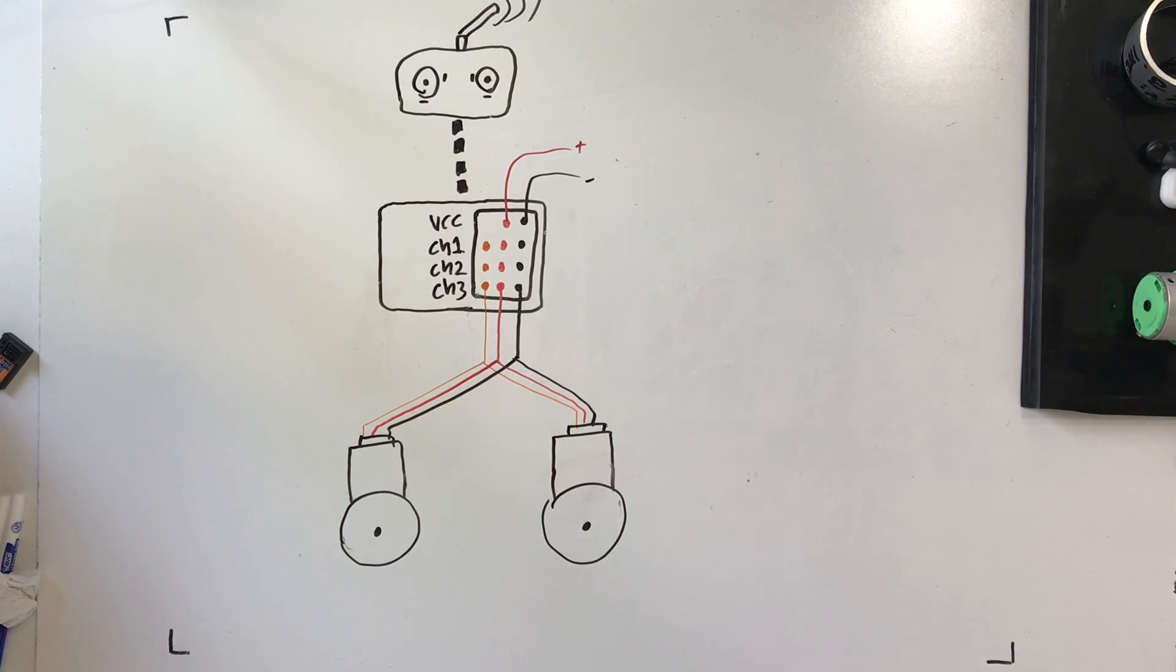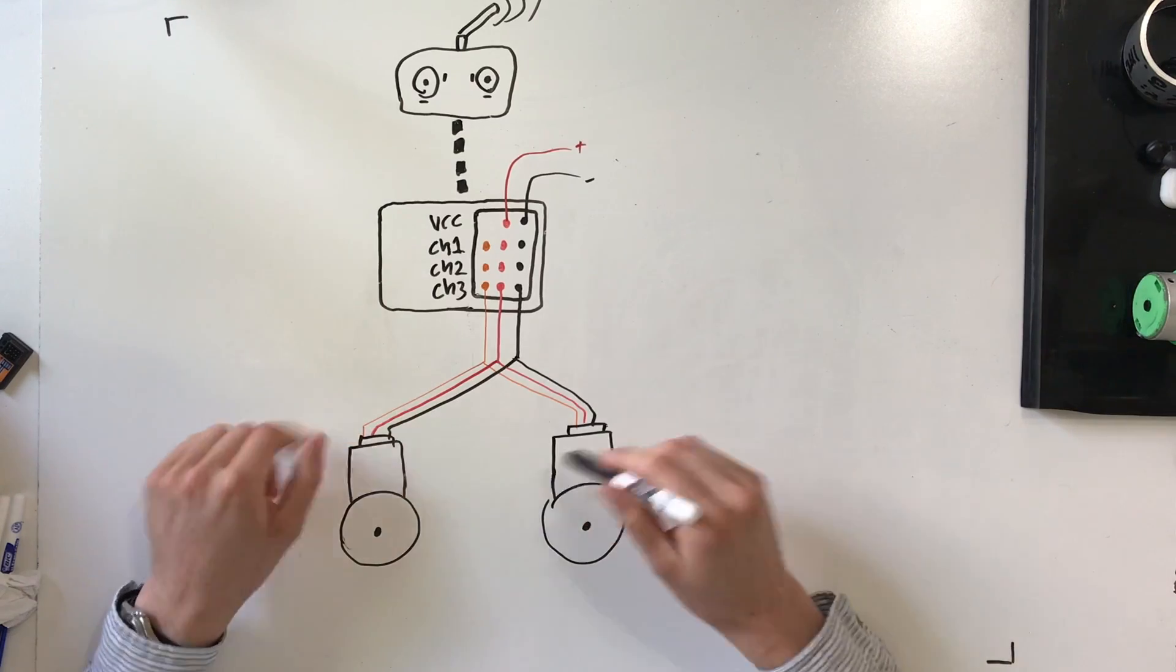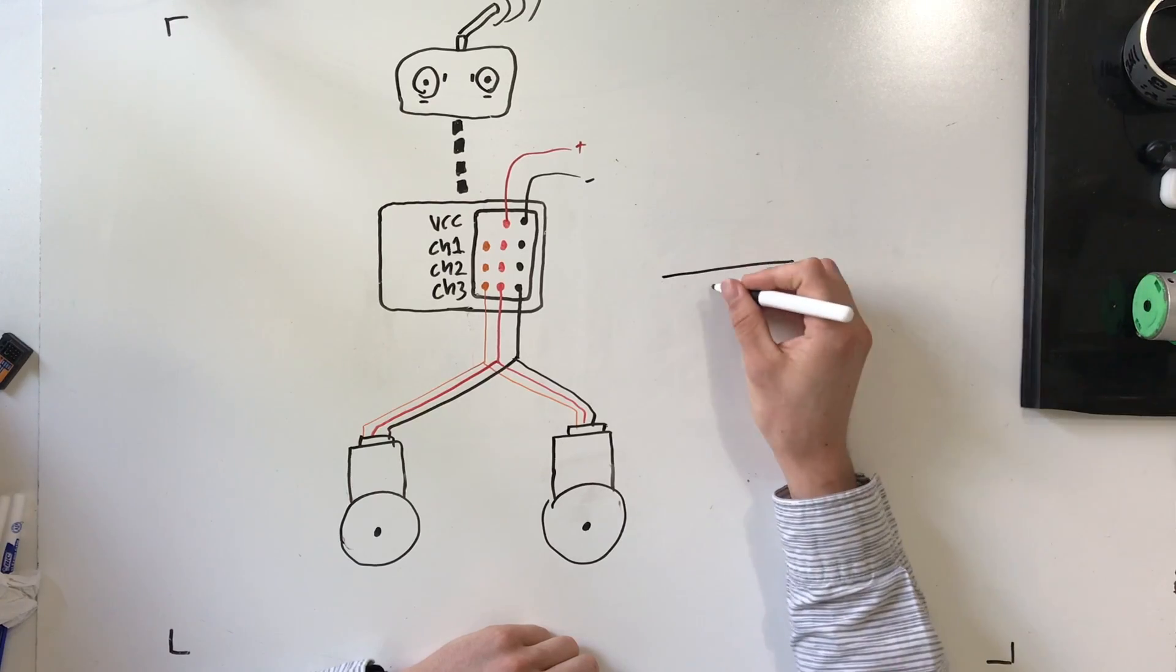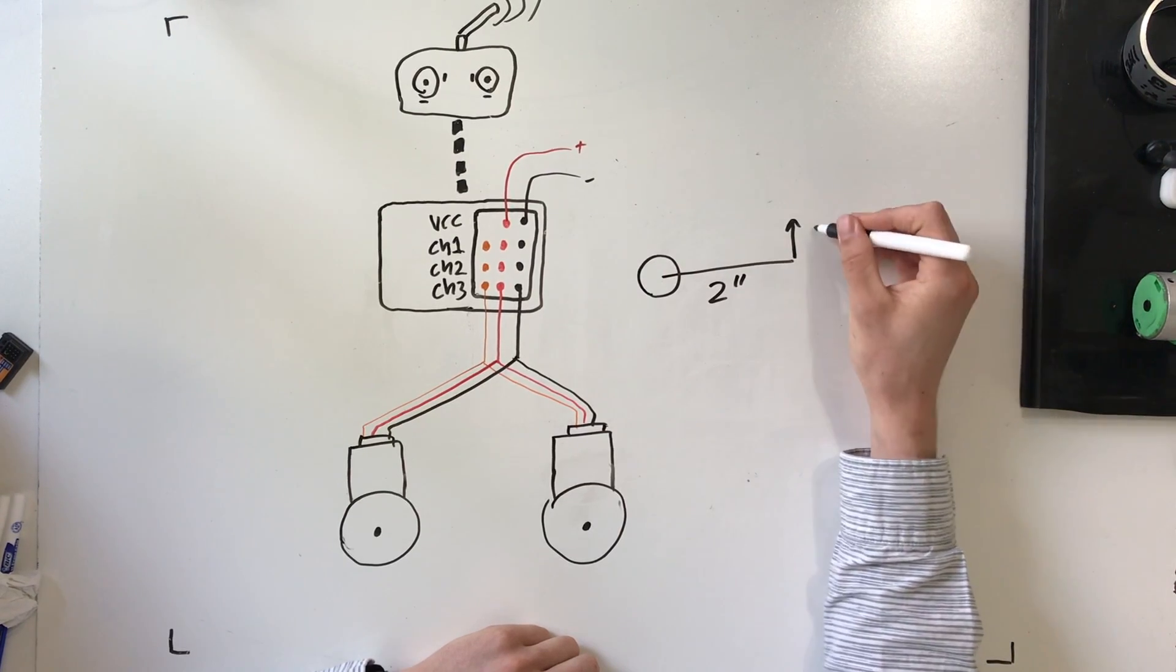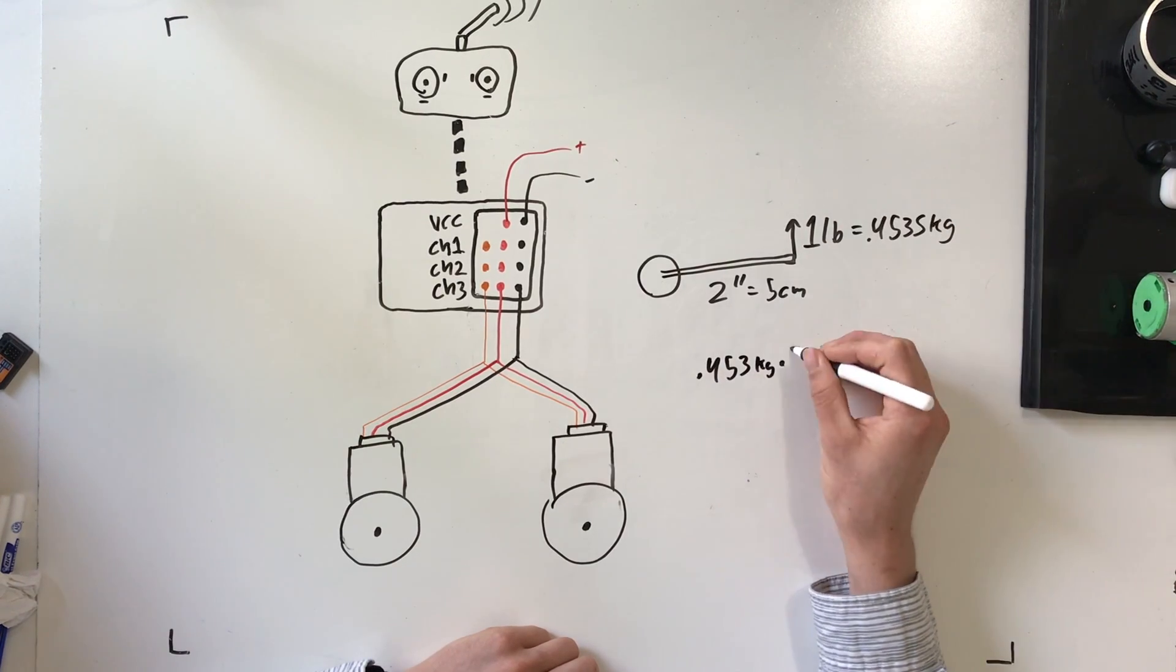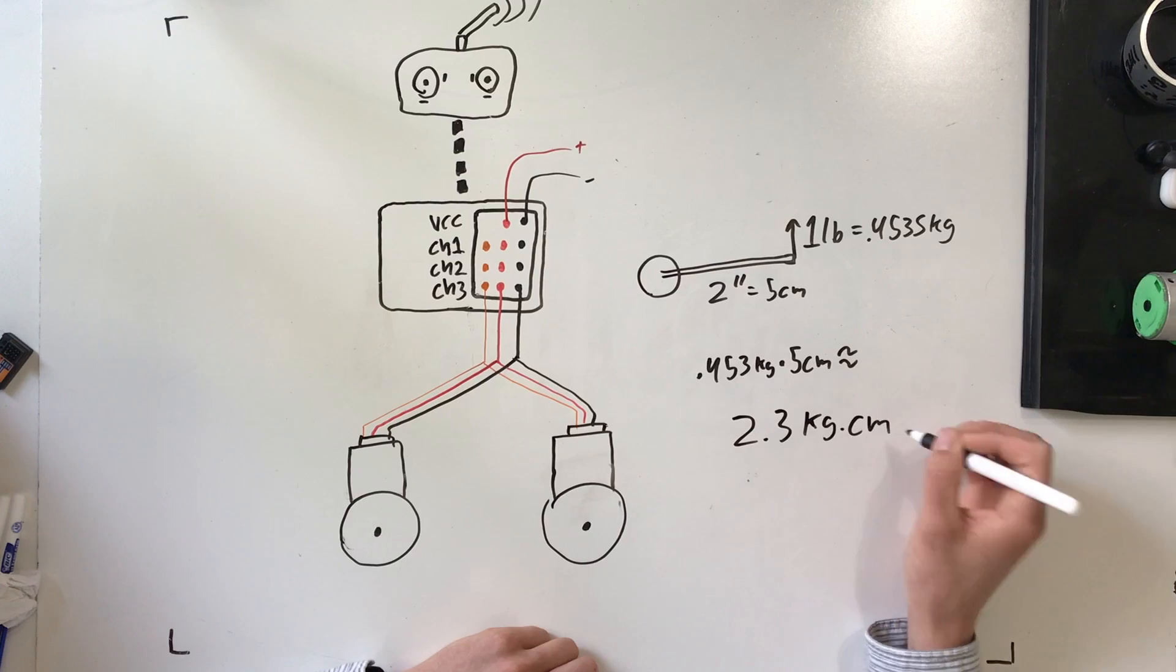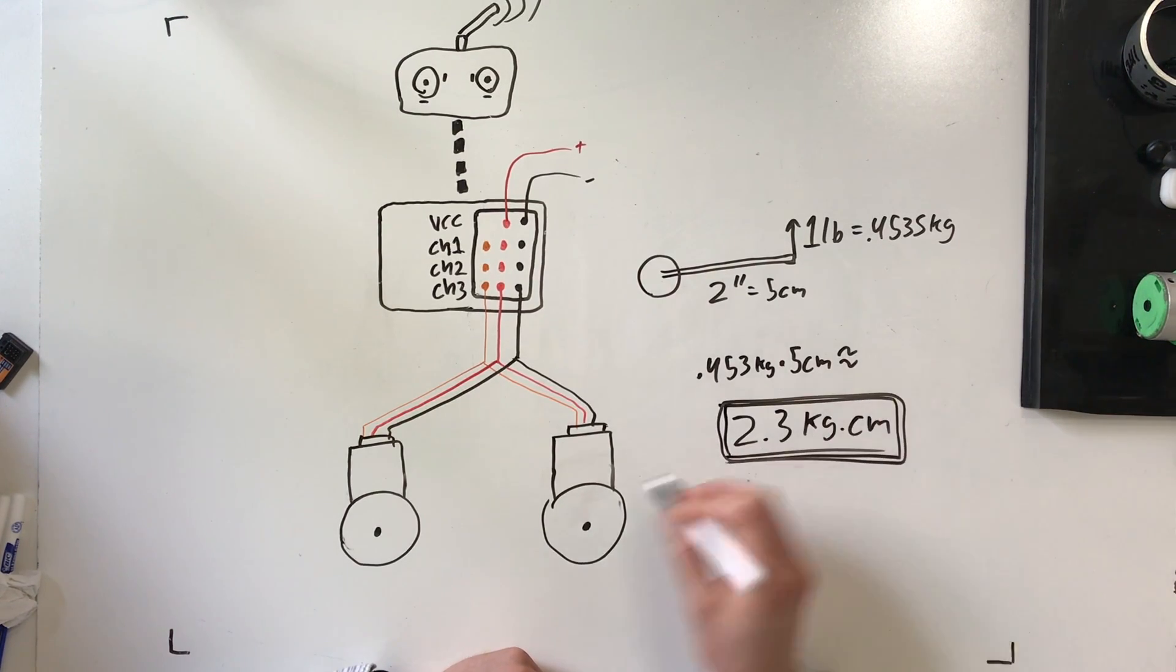Three more things about servos really quickly. One, you can wire two servos to the same port and they'll both move identical to each other. Two, buy servos that have metal gears, not plastic gears. And three, make sure your servos have enough torque. So if you've got a two inch or five centimeter lifting arm and you're trying to lift a one pound or 0.45 kilogram robot at the end of that lifting arm, your servo is going to need to have at least this much torque or it's not going to be able to lift the opponent.